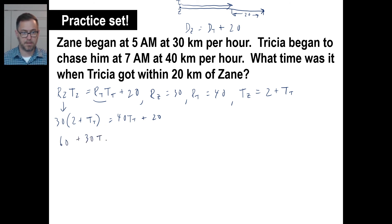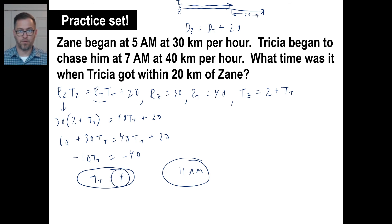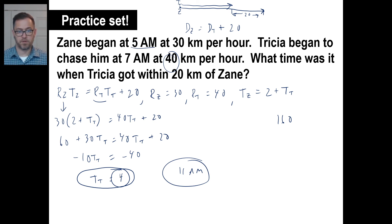Expanding: 60 plus 30 T sub T equals 40 T sub T plus 20. Moving terms gives negative 10 T sub T equals negative 40, so T sub T equals 4. Tricia goes for 4 hours starting at 7 a.m., so the answer is 11 a.m. Checking: Tricia goes 40 kilometers per hour for 4 hours — that's 160 km. Zane goes 6 hours at 30 km per hour — that's 180 km. The difference is exactly 20 kilometers. Correct!